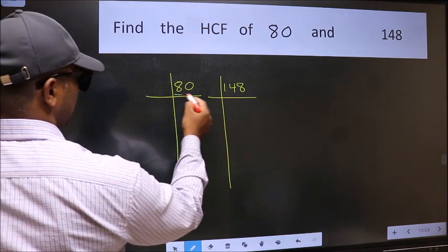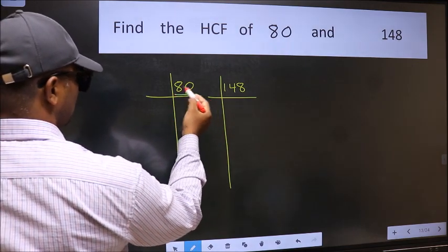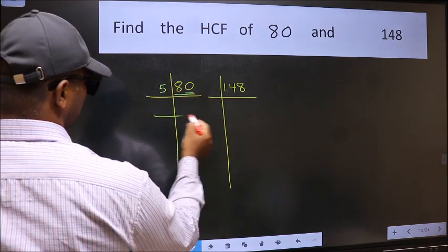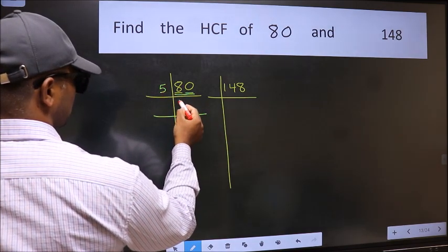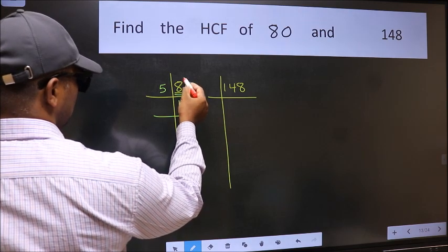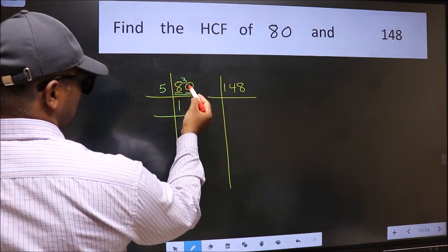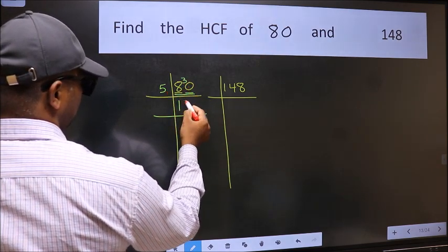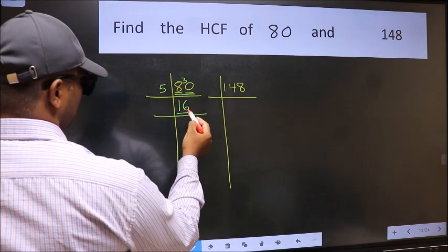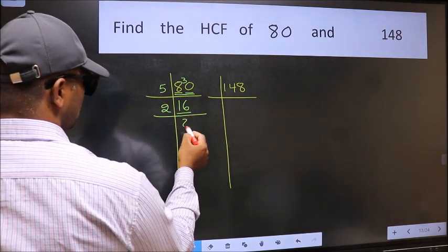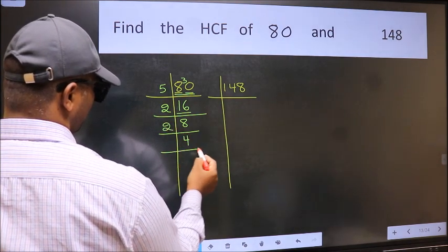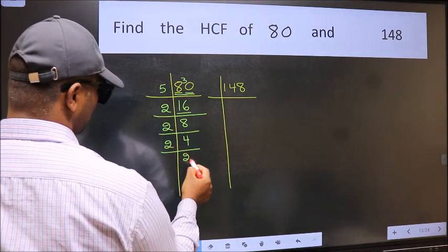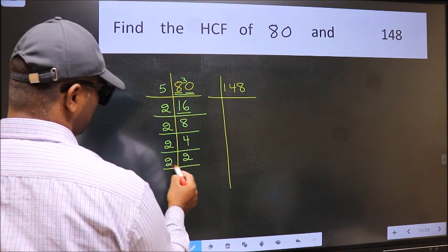Here we have 80. Last digit 0, so take 5. First number 8. A number close to 8 in 5 table is 5 once 5. 8 minus 5 is 3, carried forward 30. When do we get 30 in 5 table? 5, 6, 30. Now 16 is 2, 8, 16. 8 is 2, 4's 8. 4 is 2, 2's 4. 2 is a prime number, so 2 once 2.